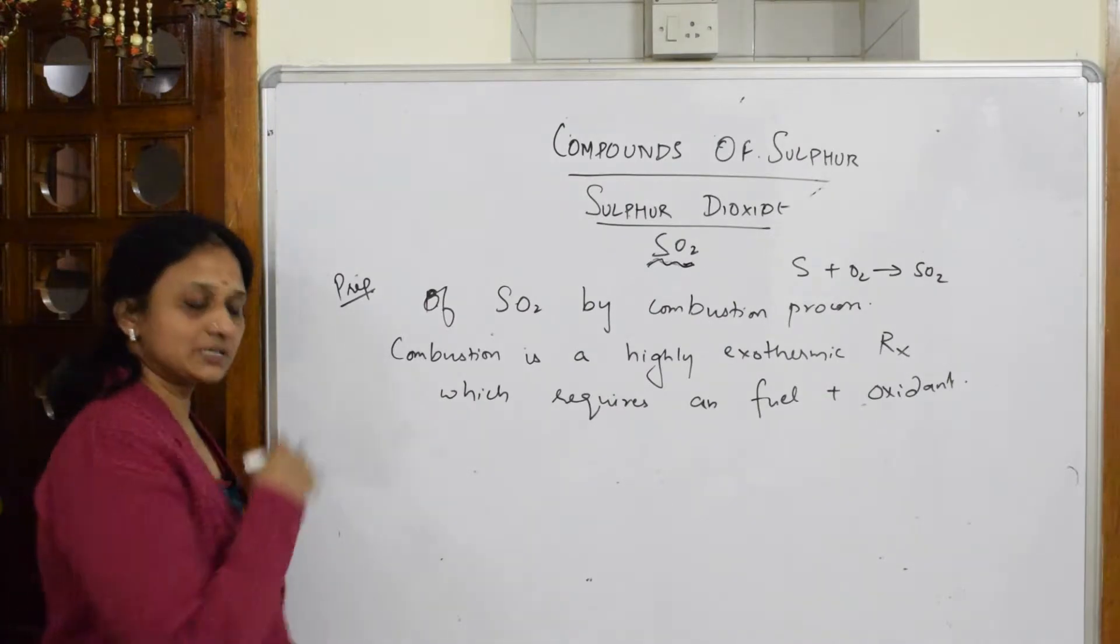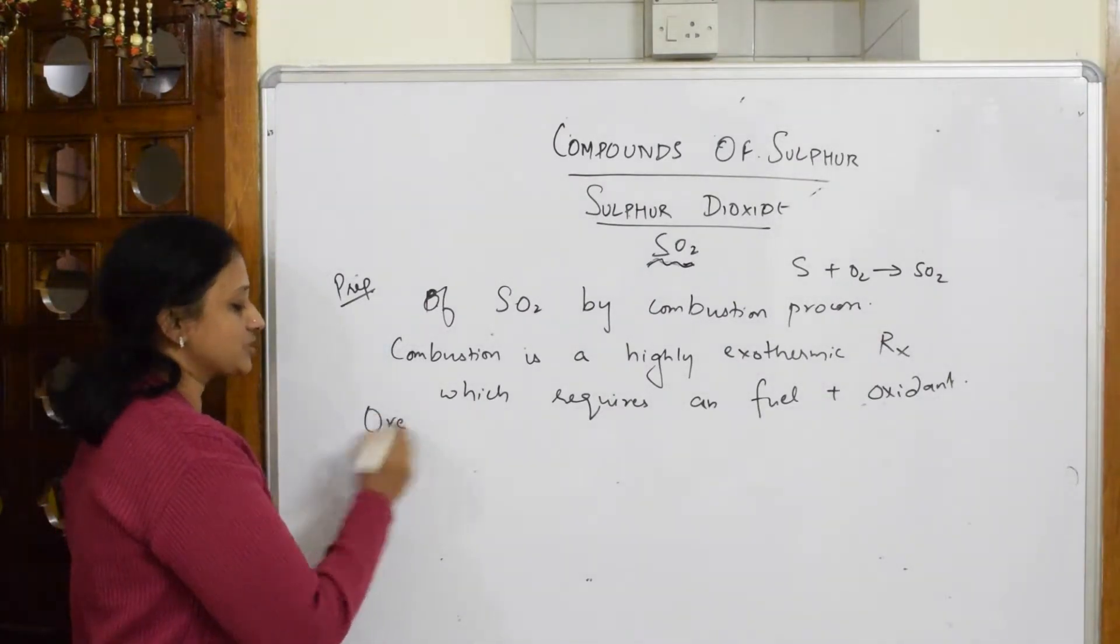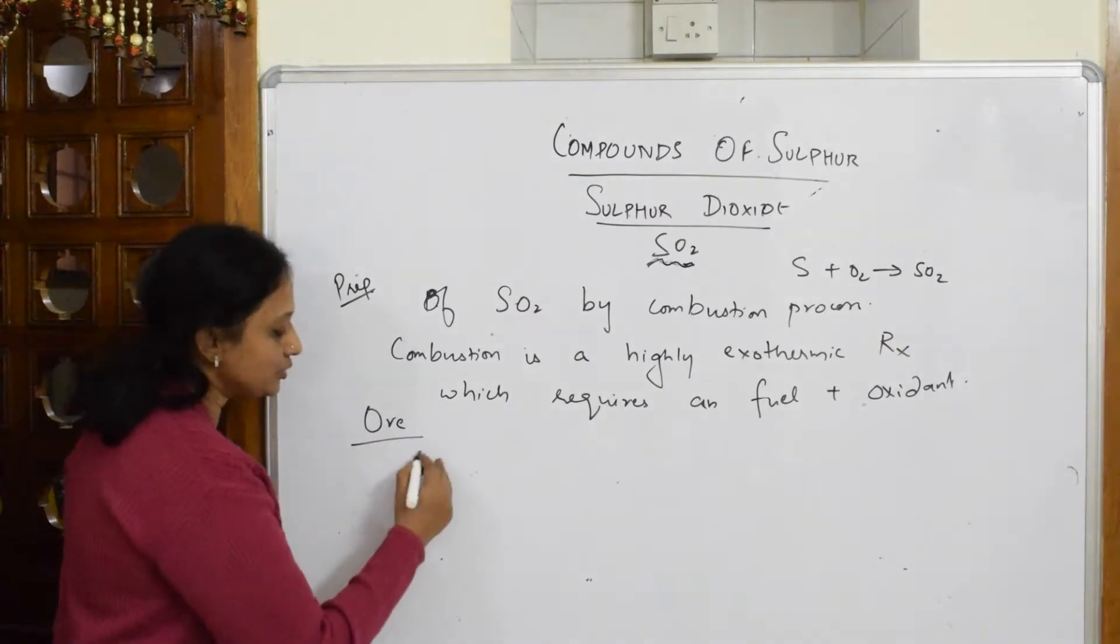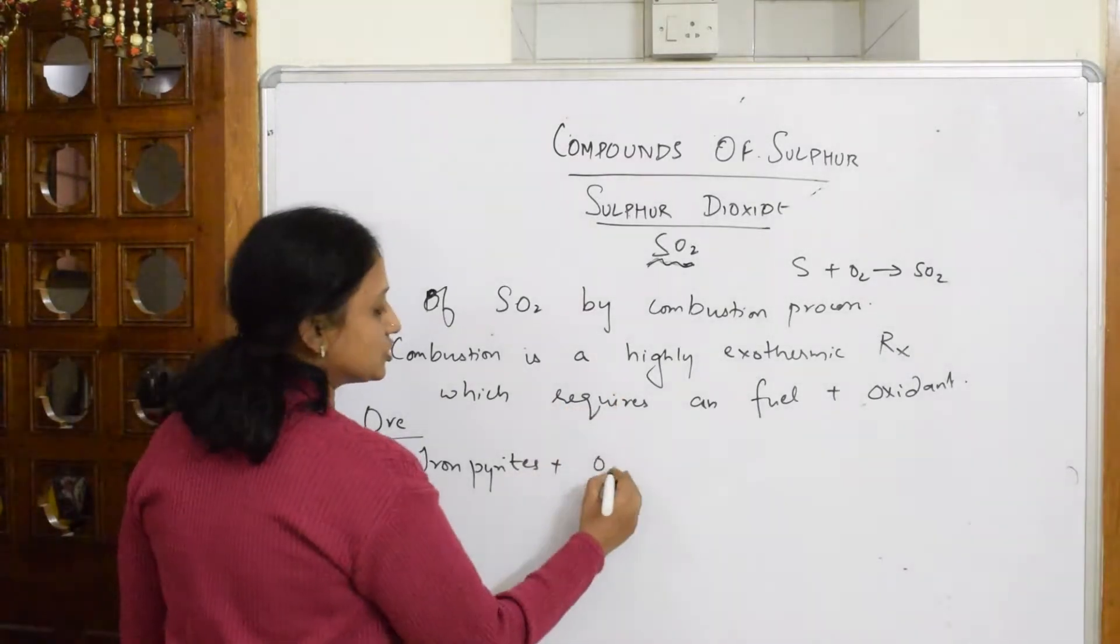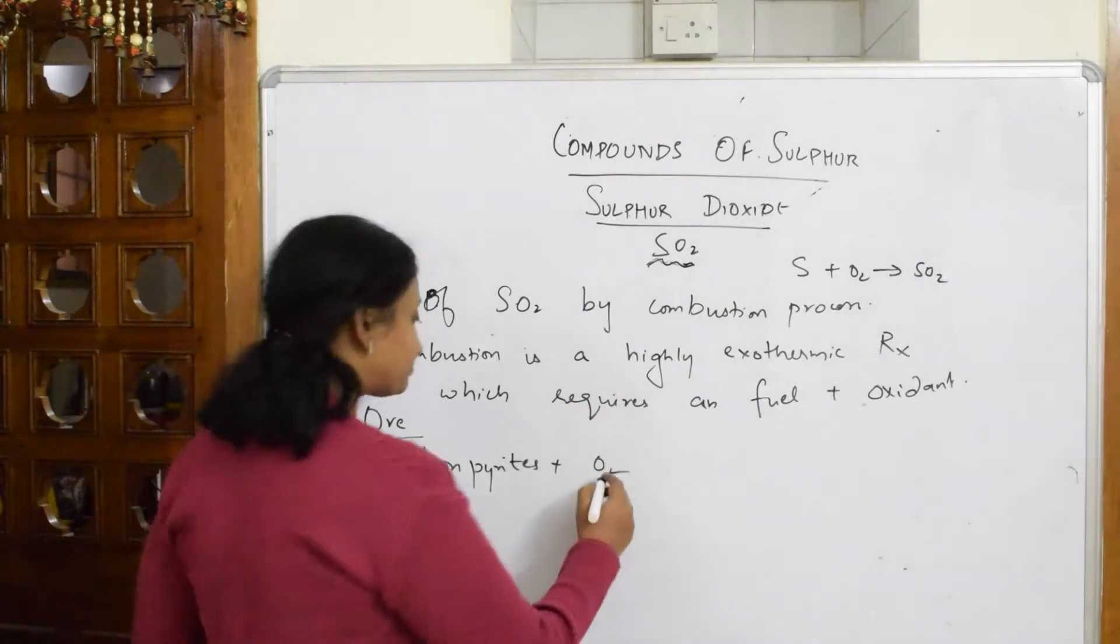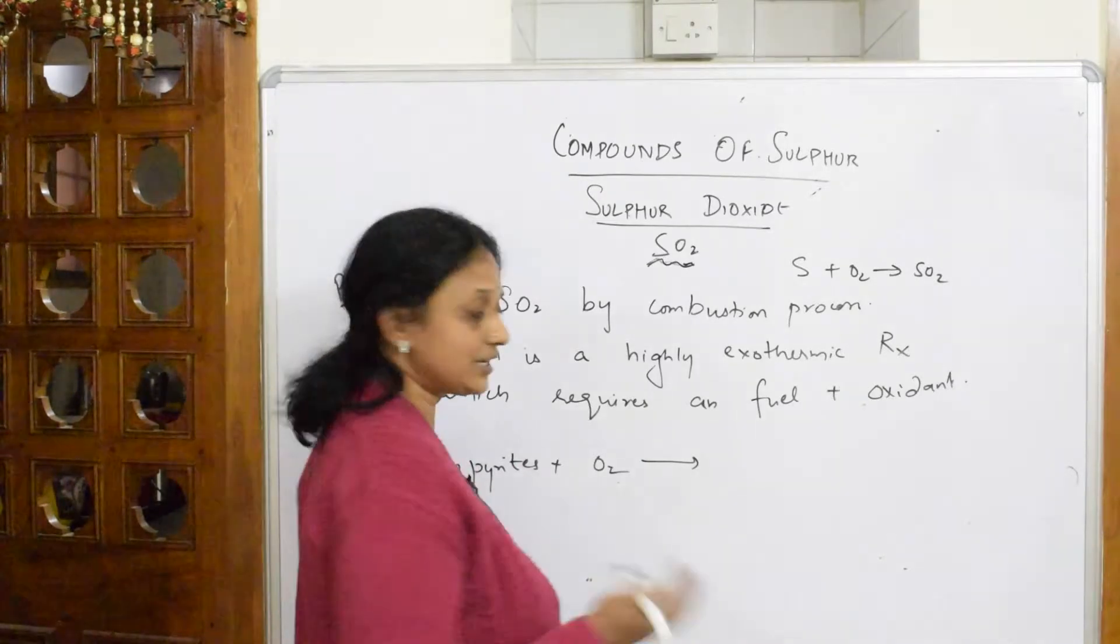Now what am I trying to explain? Suppose when I have to prepare sulfur dioxide by combustion process, I said I'm going to use ore form of sulfur. What is the ore I'm going to use? Iron pyrites. I'm going to add oxygen because it is a combustion reaction.